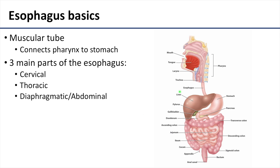The esophagus is the proximal portion of the gastrointestinal tract, and it's going to connect the pharynx to the stomach. Conceptually, we often describe the esophagus in three to four different areas, though it's important to note that it is of course continuous. The most proximal area is what we consider the cervical portion, then you'll have the thoracic portion — that's the portion we dissected already — and then we get to the diaphragmatic and the abdominal portion.